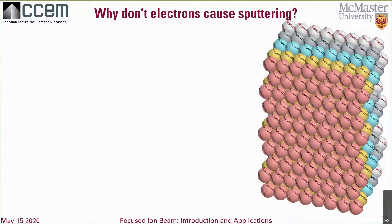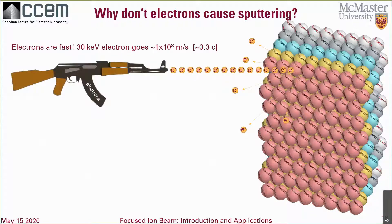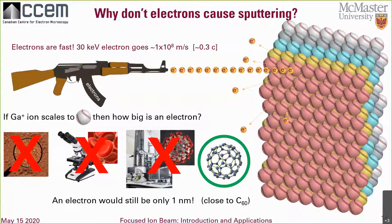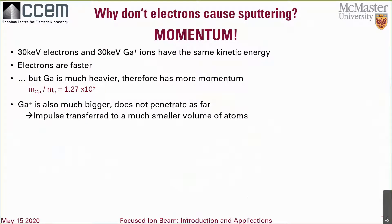So why don't electrons cause sputtering? Electrons are very fast. If we scale a gallium ion up to a baseball, how big is an electron? It's only about the size of a buckyball, which is about 2 nanometers. The answer is momentum. At 30 kV, even though an electron and ion have the same kinetic energy, the gallium ion has 342 times higher momentum and, because of its size, doesn't penetrate as deep into the material as an electron. So the impulse is absorbed by a far smaller volume of atoms.